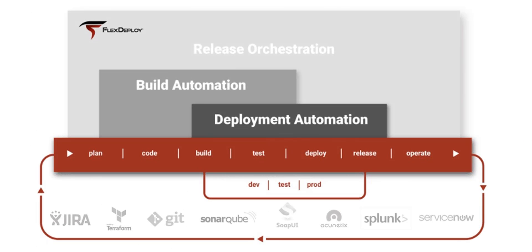FlexDeploy is a DevOps platform for continuous delivery and release automation, which orchestrates and streamlines planning through deployment and monitoring. FlexDeploy integrates your toolchain and provides a comprehensive solution for build automation and continuous integration, deployment automation, and release orchestration.